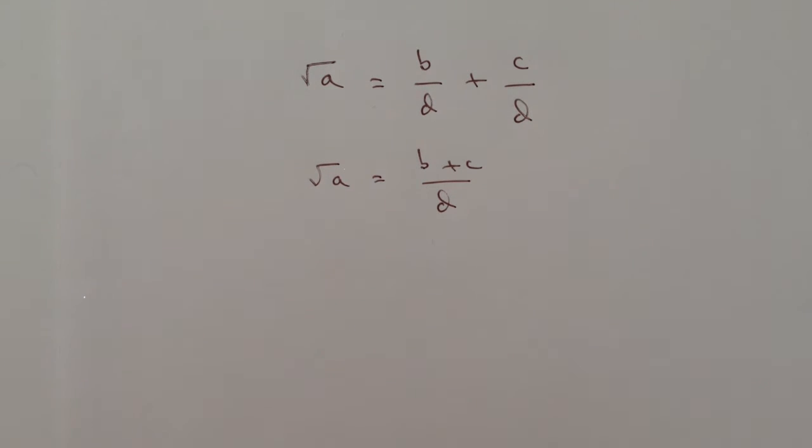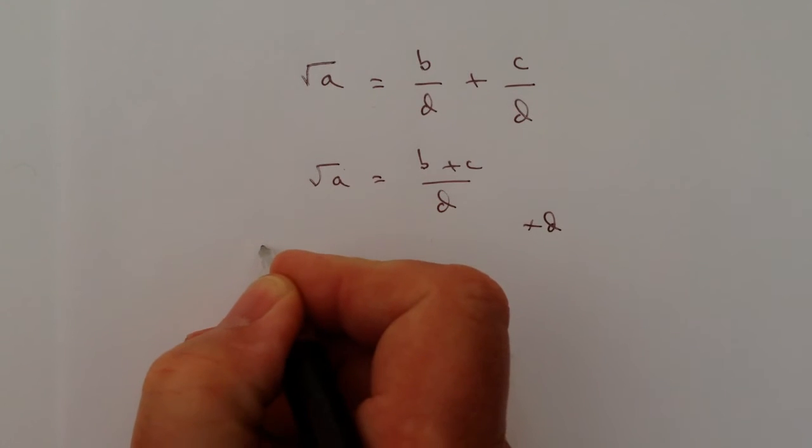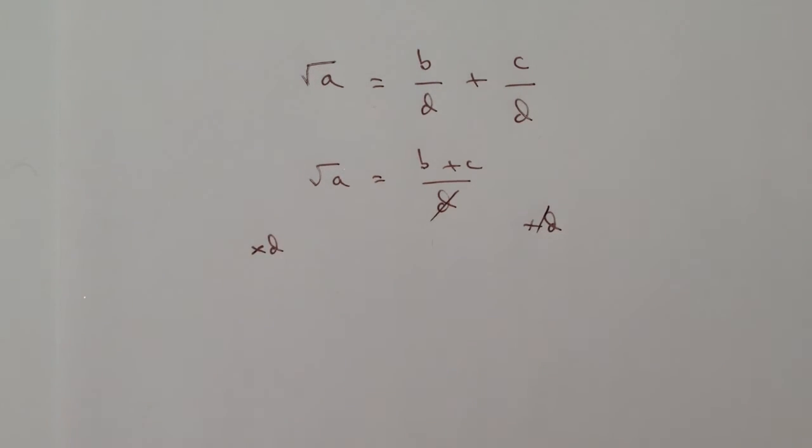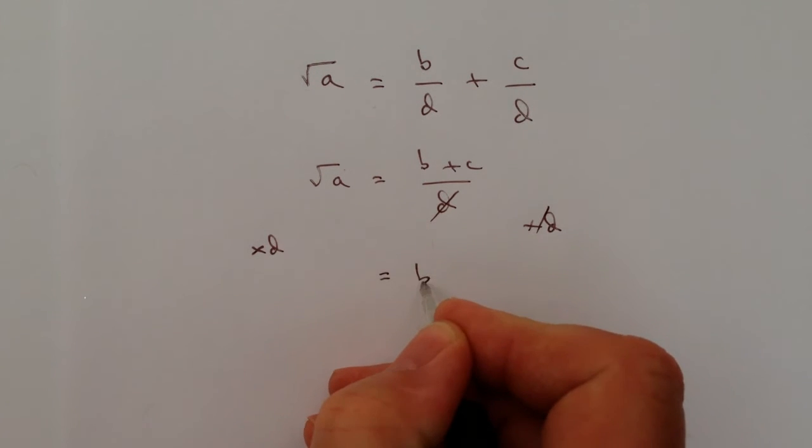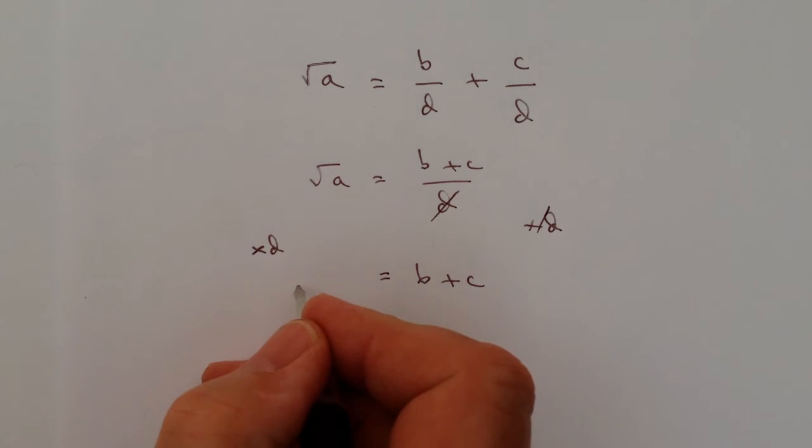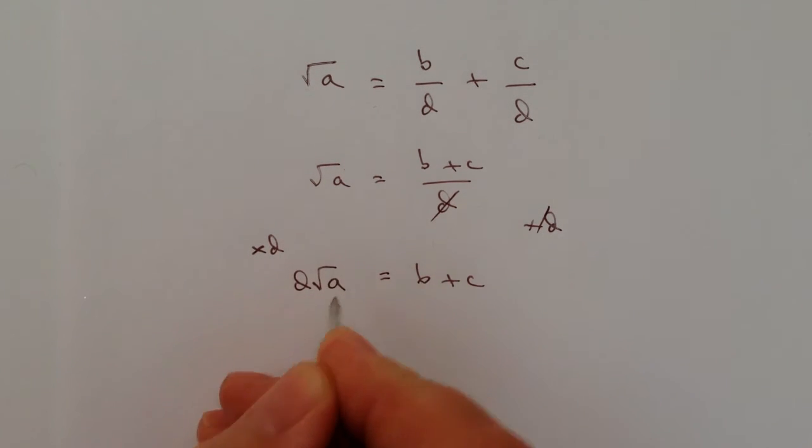The way I'm going to do that is multiply both sides by D. Because if I do that, then I lose this denominator and it means on the right hand side I can just write that as B plus C. On the left hand side I can write that as D times root A.